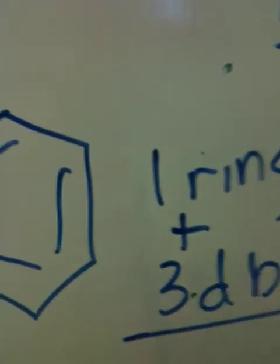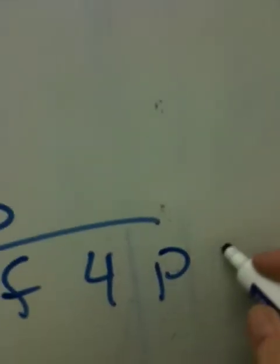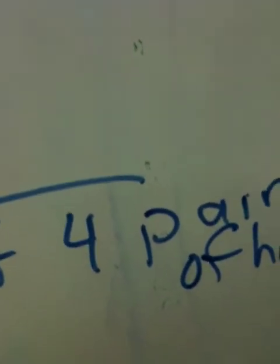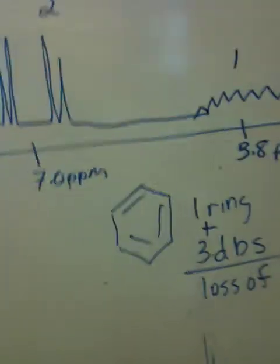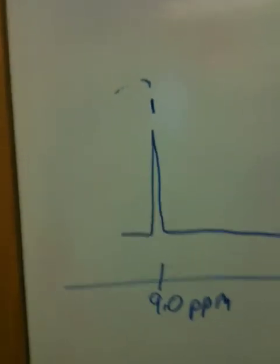Benzene adds up to a loss of 4 pairs of hydrogen. I'm going to set up my little table that I used in class. As I said in class, we usually add tetramethylsilane to a sample and then we do everything relative to that. We set that at zero parts per million and the other peaks are relative to that. Parts per million are proportional to frequency units.